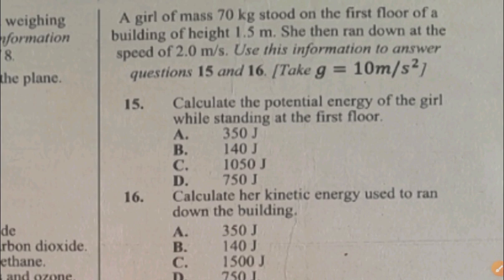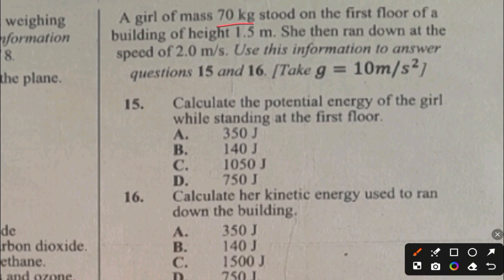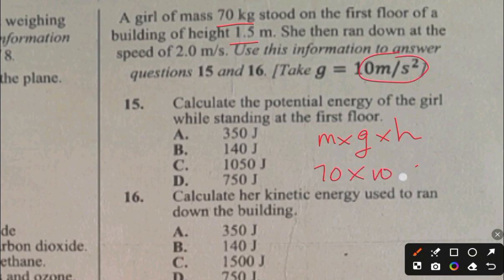Question 15 and 16. A girl of mass 70 kg stood on the first floor of a building of height 1.5 meters, then ran down at a speed of 2 meters per second. For question 15, calculate the potential energy: PE equals mass times g times height, so 70 times 10 times 1.5 equals 1,050 joules. The answer to question 15 is C, 1,050 joules.